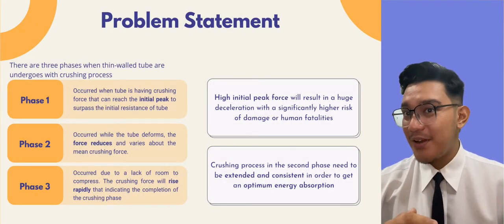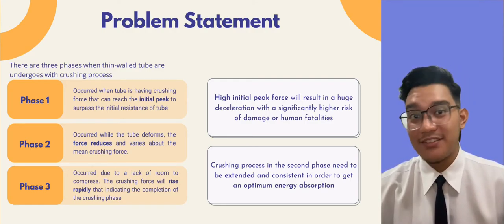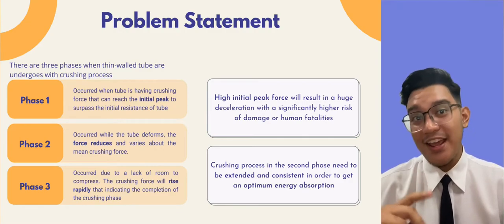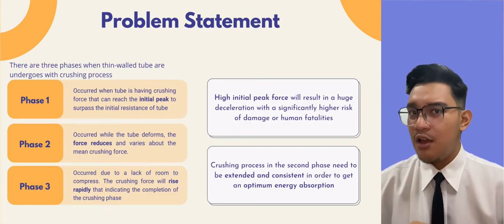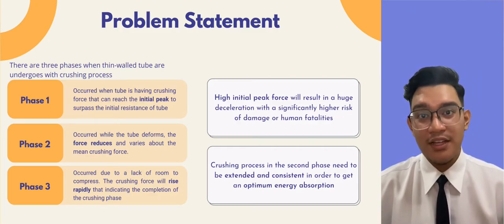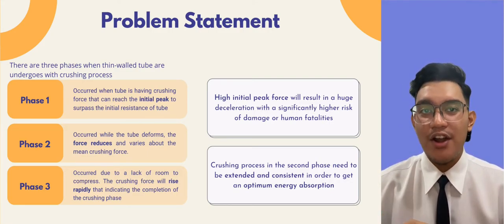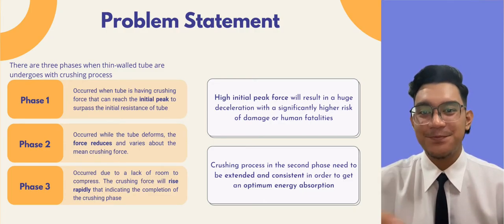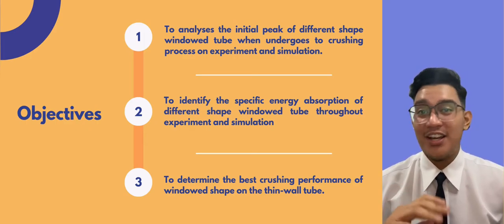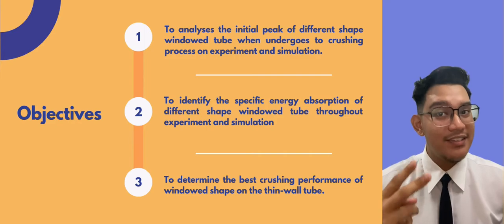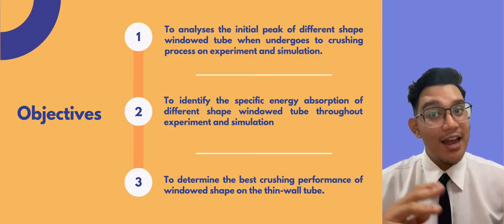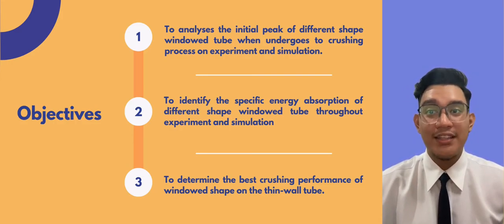Moving to the problem statement: there are three phases when a thin wall tube undergoes the crushing process, the details of which can be seen on the slide. The problem occurs during phases one and two. In phase one, a high initial peak force results in huge deceleration, causing a higher risk of damage or human fatalities. In phase two, the crushing process needs to be extended and consistent to achieve optimum energy absorption. The objectives of this study are: first, to analyze the initial peak of different shaped window tubes in experiment and simulation; second, to identify the specific energy absorption of different shaped window tubes; and lastly, to determine the best crushing performance of window shape on the thin wall tube.